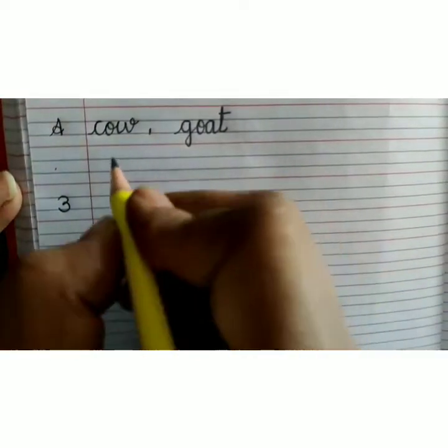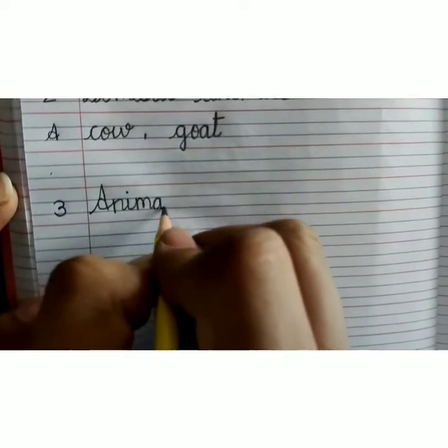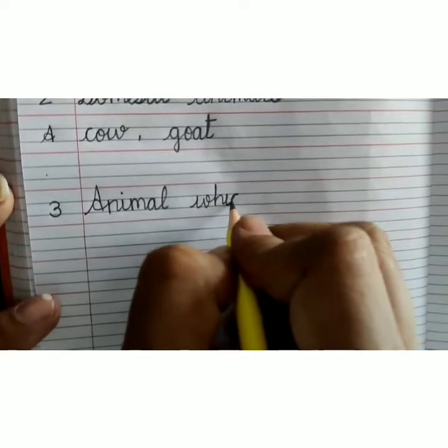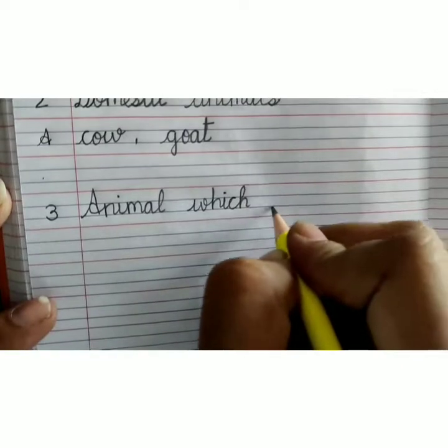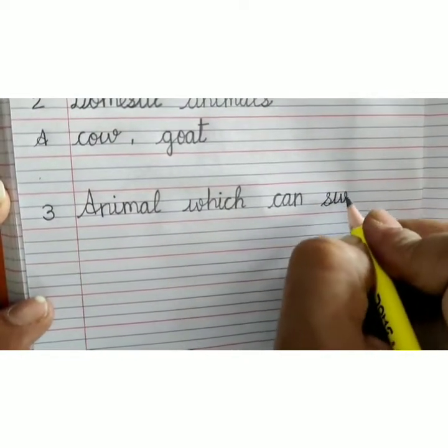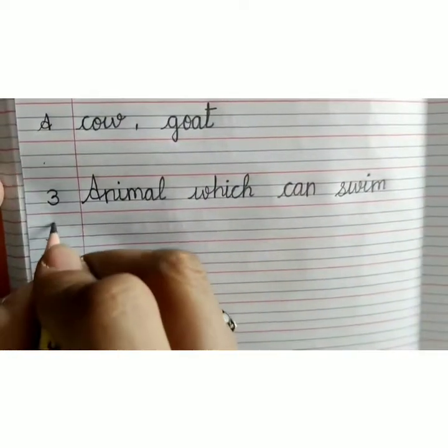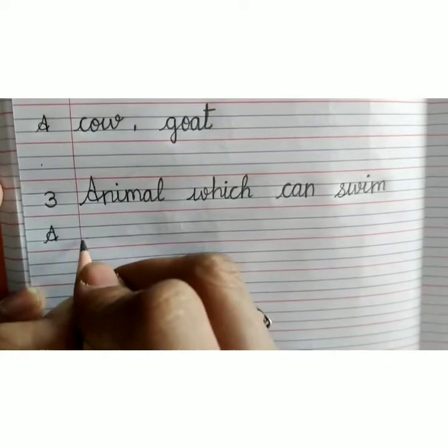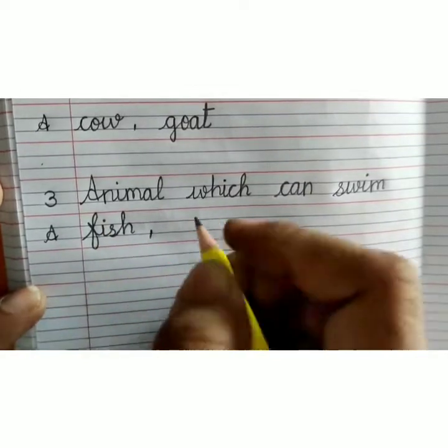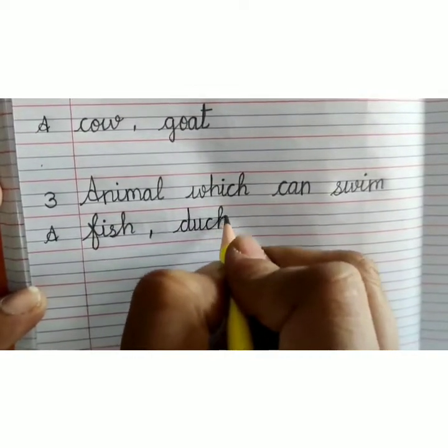Leave one line, number 3. Capital A-N-I-M-A-L, animal, W-H-I-C-H, which, C-A-N, can, S-W-I-M, swim. Animal which can swim. Answer: F-I-S-H, fish, comma, D-U-C-K, duck.